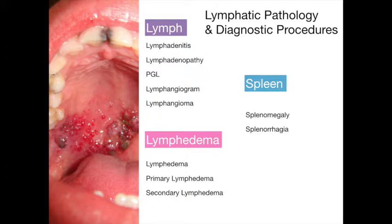Lymphadenitis, also known as swollen glands, is an inflammation of the lymph nodes. Lymphadenopathy is any disease process usually involving enlargement of the lymph nodes. Persistent generalized lymphadenopathy, PGL, is the continued presence of enlarged lymph nodes. PGL is often an indication of the presence of a malignancy or deficiency in the immune system function.